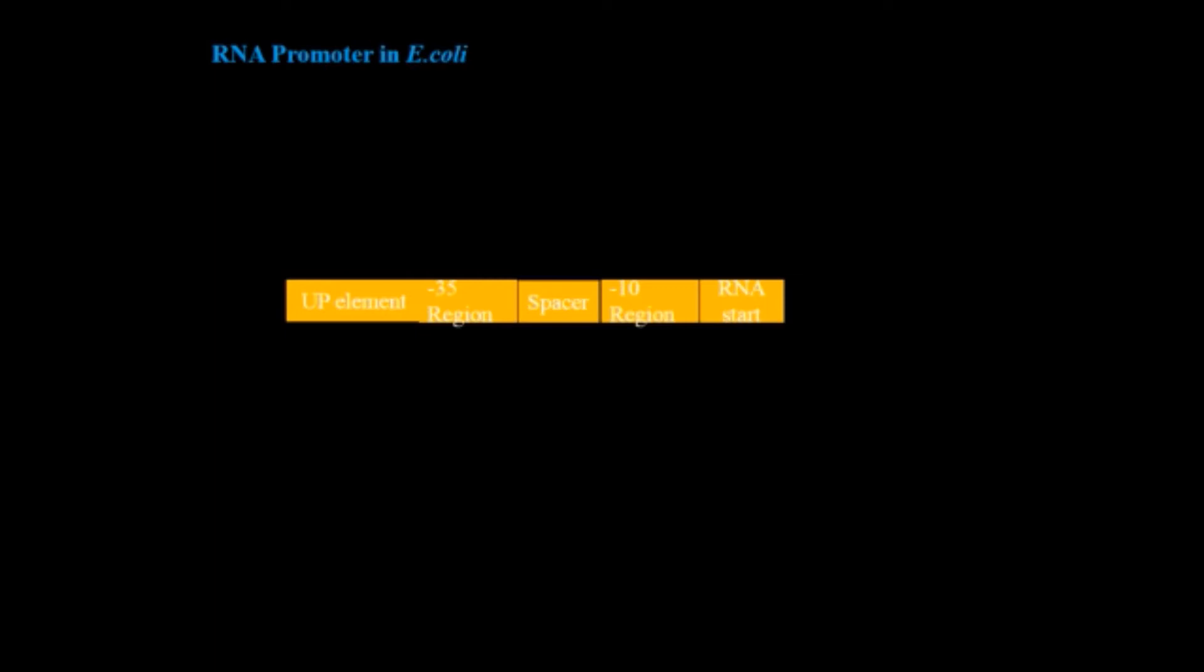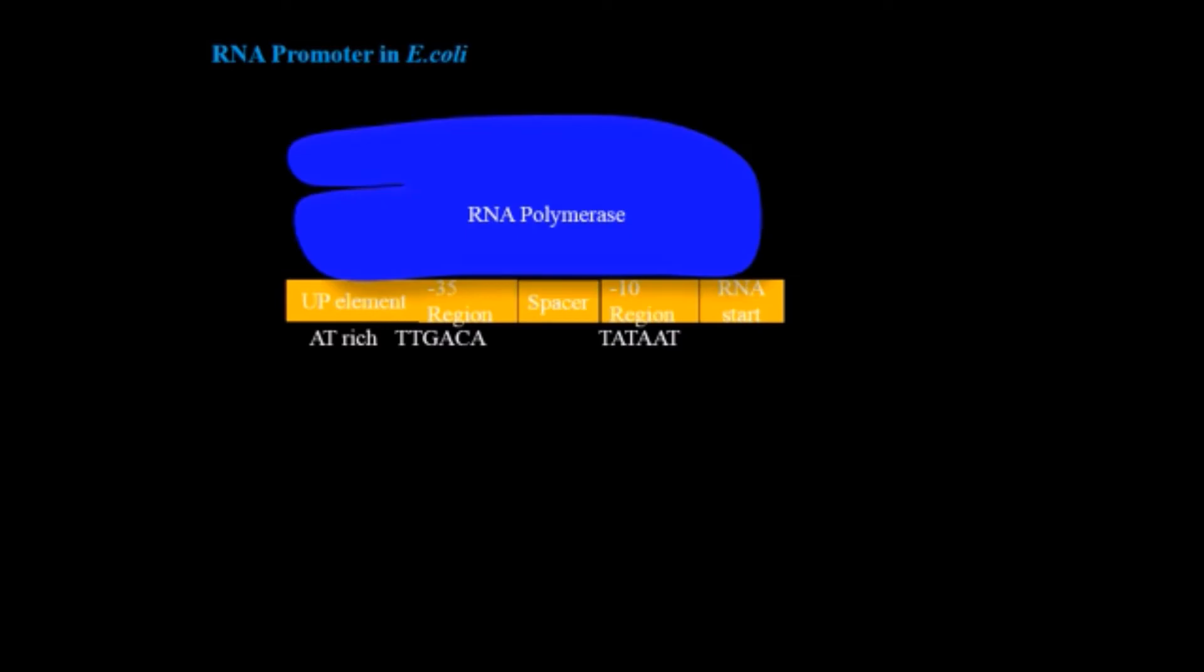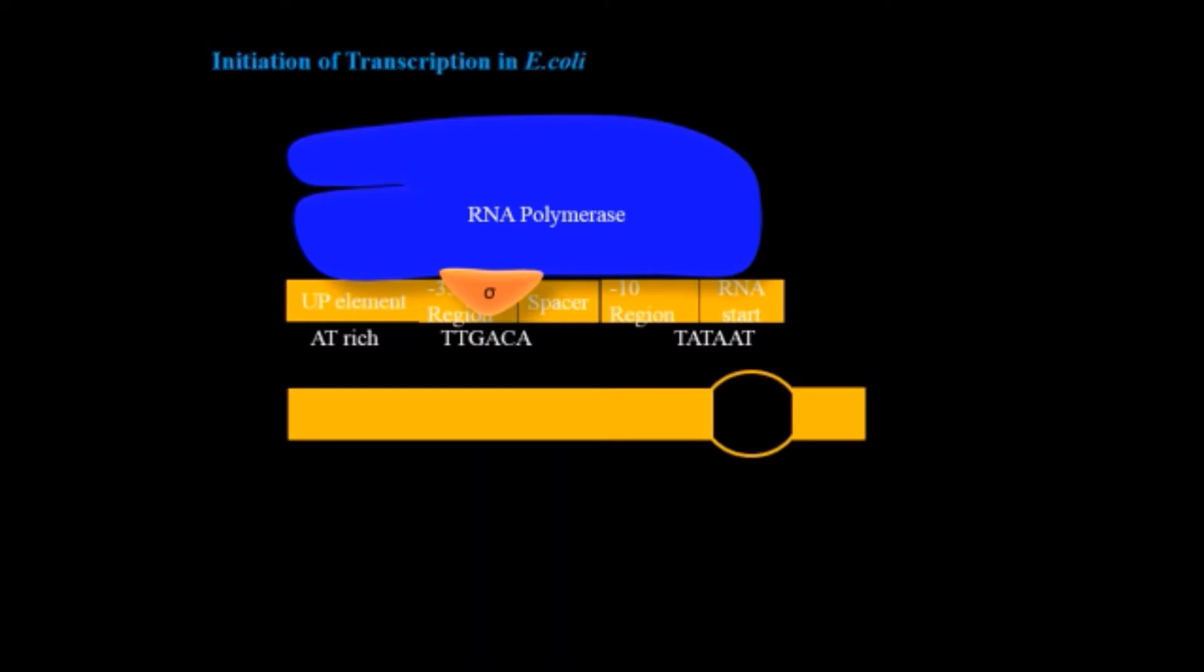In upstream element, it is AT-rich, while minus 35 region has a consensus sequence of TTGACA. Minus 10 region is also known as the Pribnow box and has a consensus sequence of TATAAT. RNA polymerase binds to this promoter. Alpha region binds with the upstream element and beta subunits bind with the minus 35 region, while sigma subunit also binds with the minus 35 region. Now is formed the closed complex, and when unwinding of DNA starts it will form the open complex.